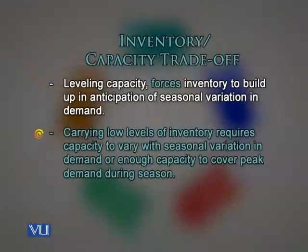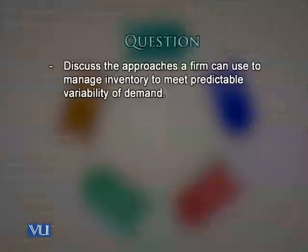When you are carrying low levels of inventory, you face the impending situation of going out of stock, and any variation in seasonal demand would require an additional amount of investment in resources. The first and foremost topic of interest for any supply chain manager would be: what strategies and approaches can a firm use to manage inventory to meet predictable variability of demand?